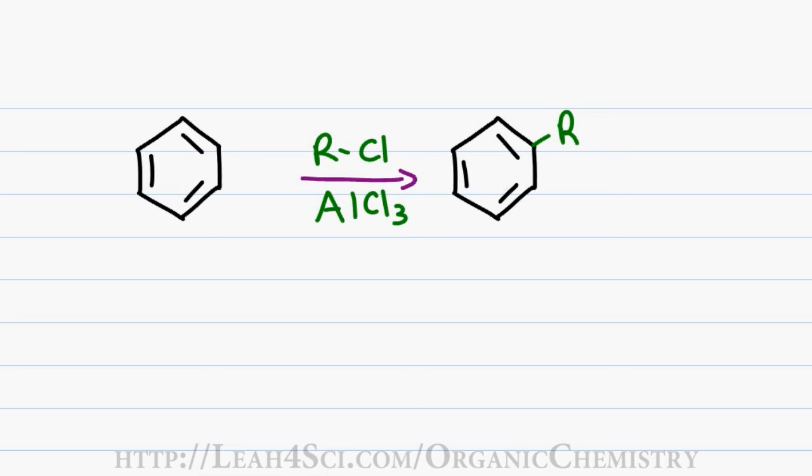The key to this reaction is the fact that when chlorine is removed from the alkyl group, we get a carbocation which is very unstable and therefore the superelectrophile. So let's see how that happens.